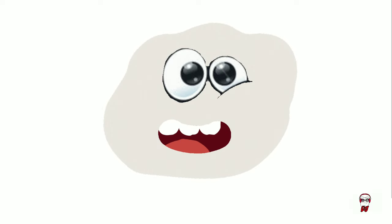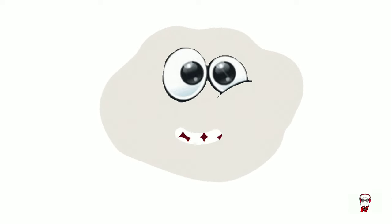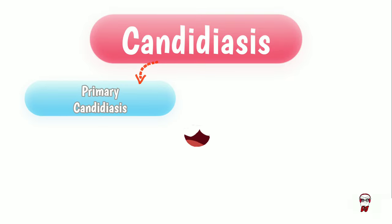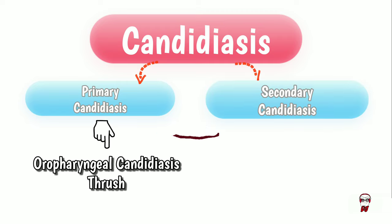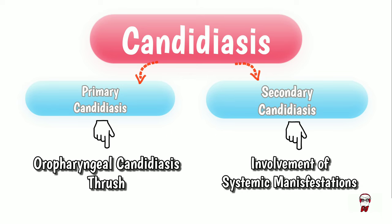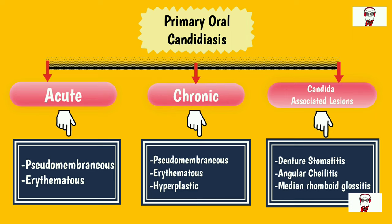I'm in the host. So how do I present myself? I can present myself in many forms depending on the environment and the host's health. Primary candidiasis occurs in the mouth and throat, known as oropharyngeal candidiasis or thrush. Secondary candidiasis is when other systemic manifestations are involved. Primary oral candidiasis can further be seen in acute and chronic forms, such as pseudomembranous, erythematous, or hyperplastic.